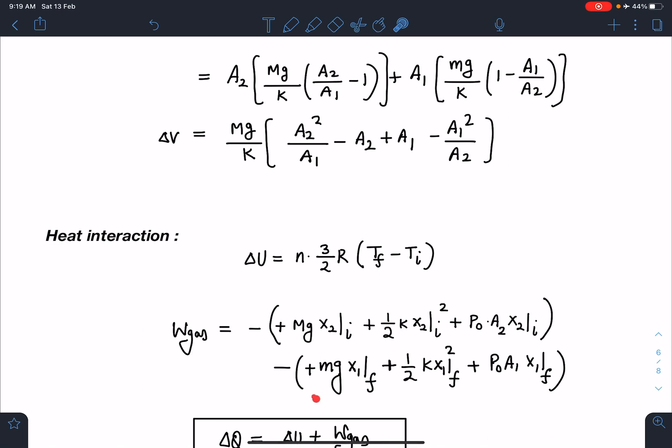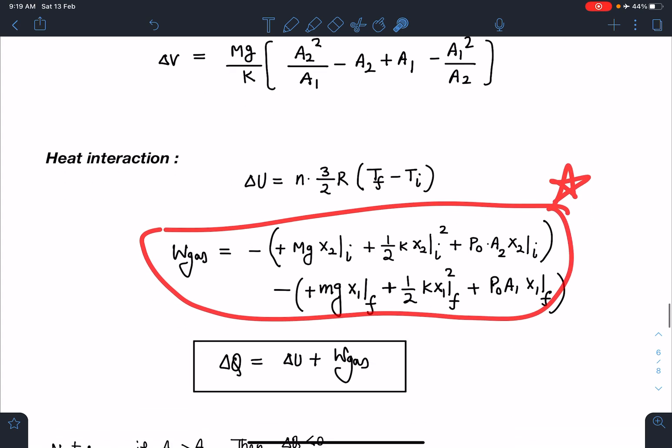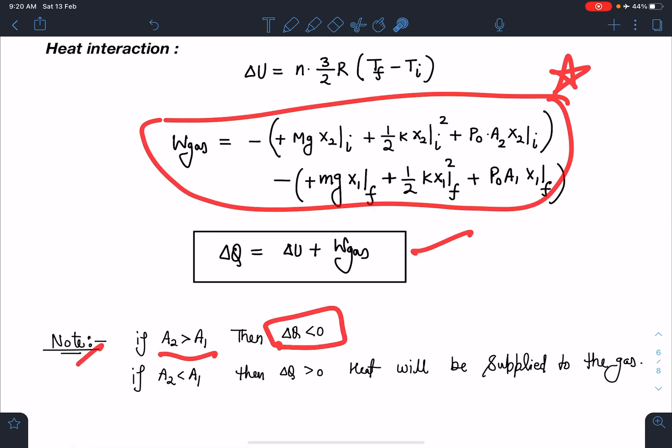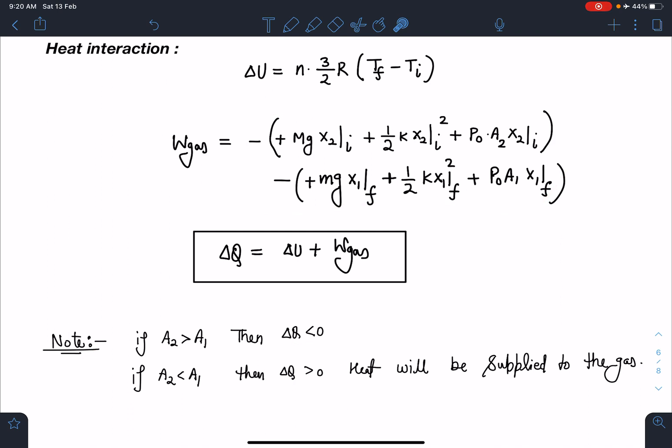On the second piston, similarly I can write work done by gravity, work done by spring, and the atmospheric work done. If I adjust these energies here, you will see that this term and this term are going to get equal magnitude, so overall I'm going to get this W_gas as negative. Overall, this heat is negative. There is a remark here: if A2 is greater than A1, then actually heat is not supplied, it must be rejected. So the correct condition I should have taken in order to calculate heat supplied by the heater is A2 should have been less than A1, so then delta Q will be positive.